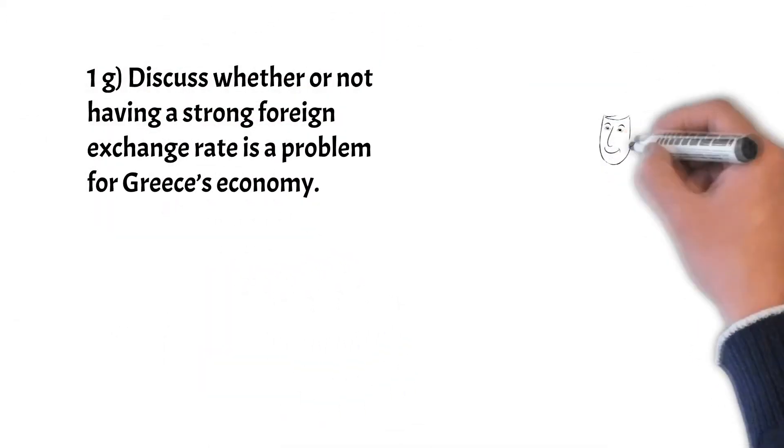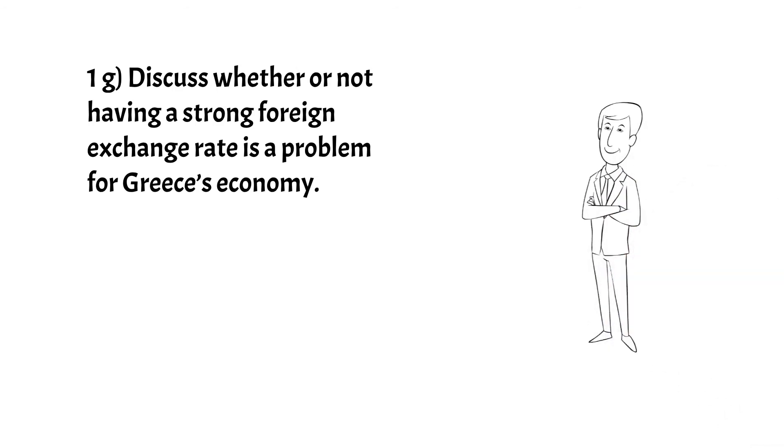Now question 1g: discuss whether or not having a strong foreign exchange rate is a problem for Greece's economy. Discuss means that we have to mention both the positives and negatives around a strong foreign exchange rate. So why it might be a problem: a strong foreign exchange rate will lead to a high price of exports. This decreases the quantity demanded of exports, decreasing the value of these exports. A strong foreign exchange rate will lead to the low price of imports. This may increase the quantity demanded for imports, increasing the value of these imports. This may decrease net exports. This may decrease the total demand. This could end up decreasing economic growth and decreasing employment.